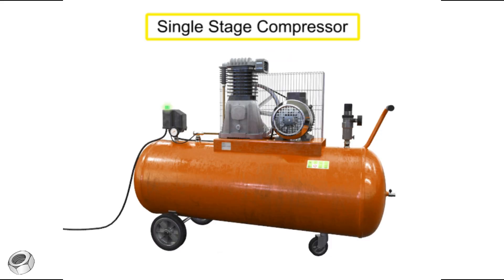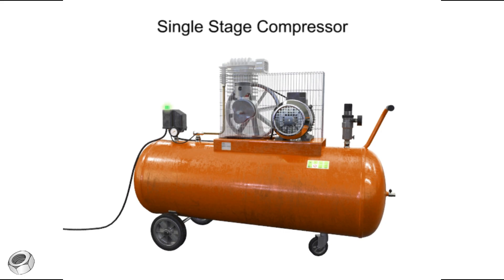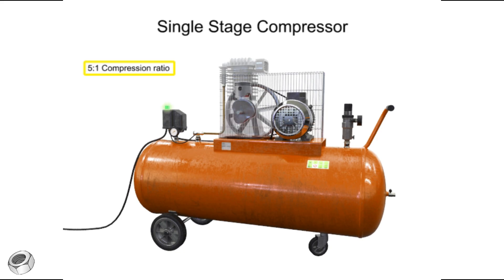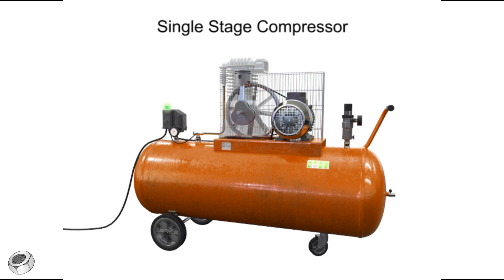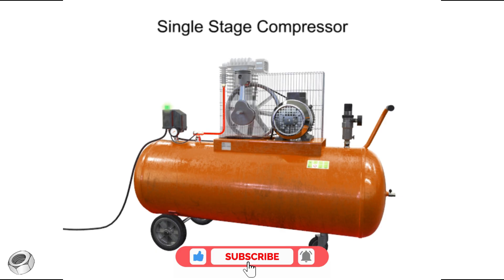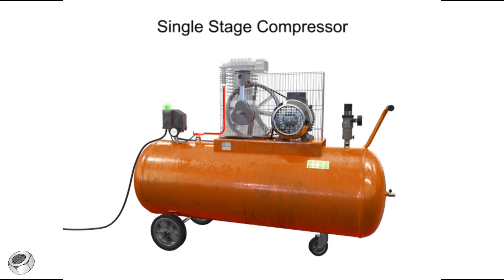This is a single stage compressor. It has only one piston and cylinder, and compresses the air in only one stage. A single stage compressor typically has a compression ratio of 5 to 1, with an output pressure of about 50 to 75 psi. As air is compressed, it becomes increasingly hot. If the air becomes too hot, not only is the compression cycle less efficient, but there is the hazard of an explosion if any hydrocarbon material, such as oil or lubricant, comes into contact with the overheated air.